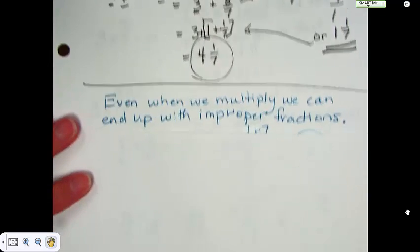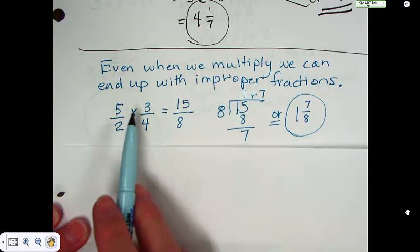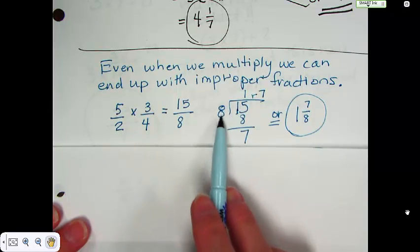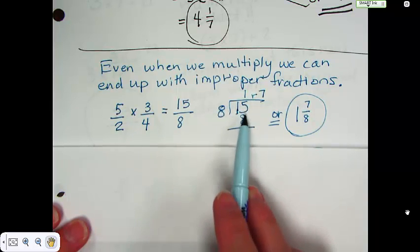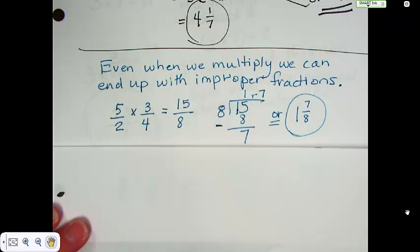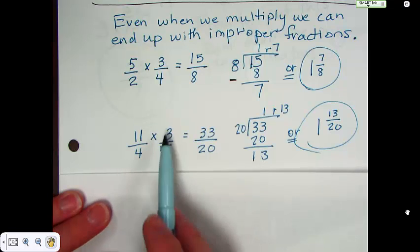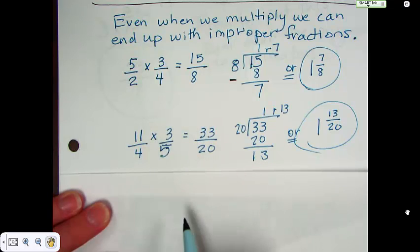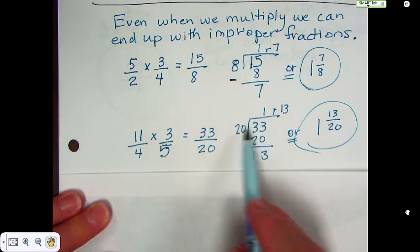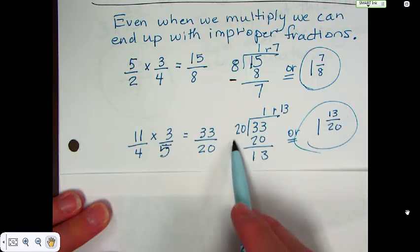Even when we're multiplying, we can end up with improper fractions. Here's a good example. 5 halves times 3 fourths. 15 over 8. So just take 15 divided by 8. 8 goes into 15 one time with a remainder of 7. 1 and 7 eighths. Here's another one. Again, this is a little bit bigger. 11 fourths times 3 fifths. Now notice, on both of these, we're starting with improper fractions to multiply in the first place. We get 33 over 20. So 20 goes into 33 one time with a remainder of 13 or 1 and 13 twentieths.